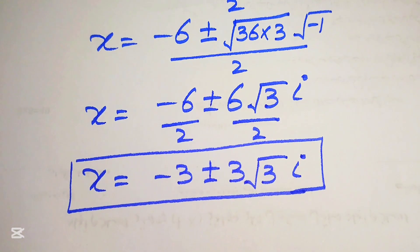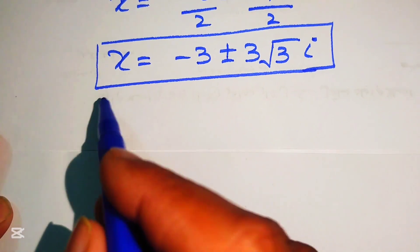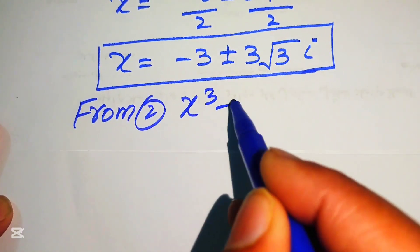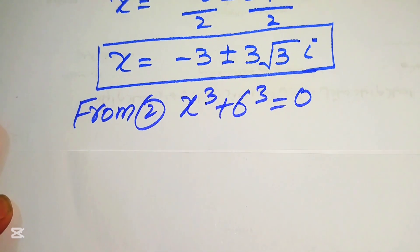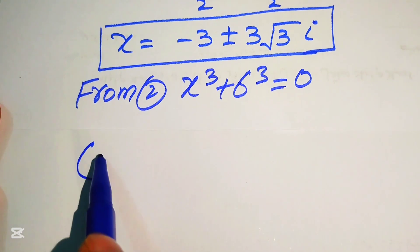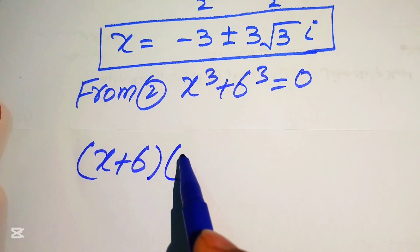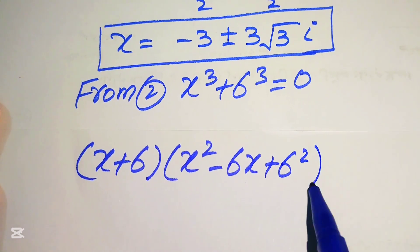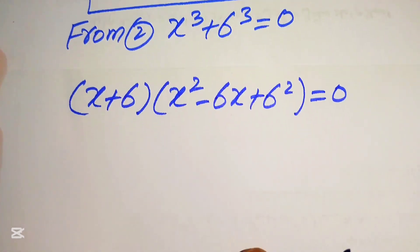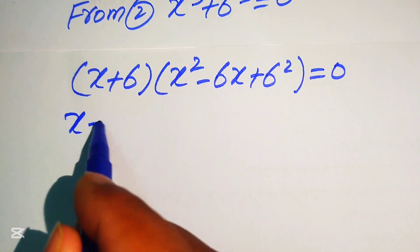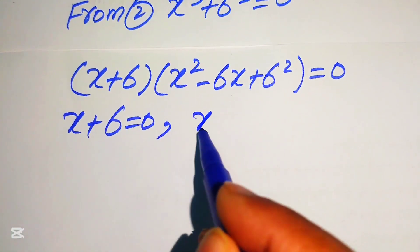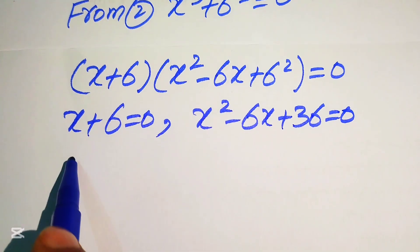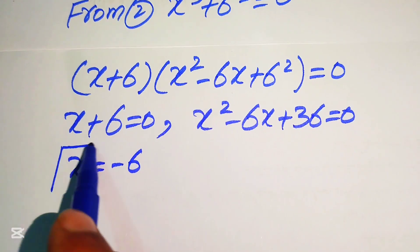Now we solve equation 2: x³ + 6³ = 0. Using the cubic formula a³ + b³ = (a + b)(a² − ab + b²), we get (x + 6)(x² − 6x + 36) = 0. This gives two cases: x + 6 = 0, so x = −6, and x² − 6x + 36 = 0.